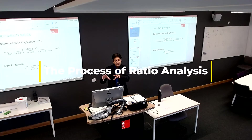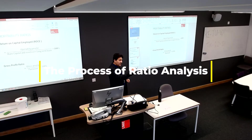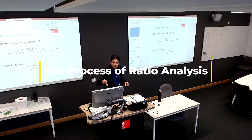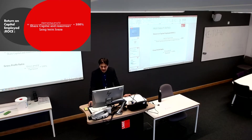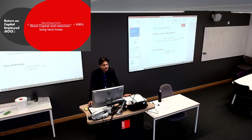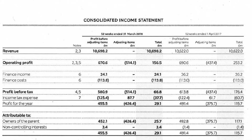The process of ratio analysis requires us to look at the formula, understand which figures are needed, locate those figures from the financial statements, and then use them in the formula. For ROCE, we need operating profit from the income statement, and share capital and reserves plus long-term loans from the balance sheet.